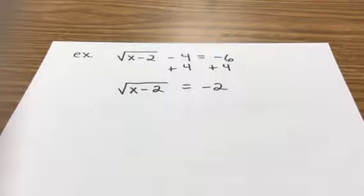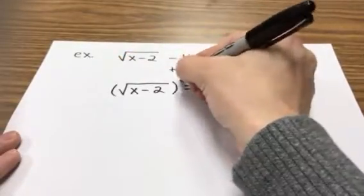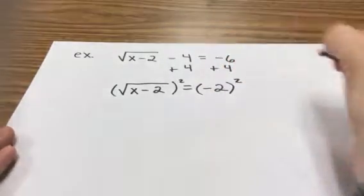So now let's go ahead and get rid of that square root symbol. To get rid of a square root, I have to do the opposite of square root. I have to square it. And to make it fair, let's square both sides.